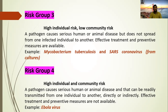Risk group 4 microorganisms have the highest risk for both the individual and the community. Unfortunately, in risk group 4, effective treatment and preventive measures are not available yet. The spread of infection from one individual to another is highly probable, and the spread may occur directly or indirectly. A pathogen in this group causes serious human or animal disease that can be readily transmitted from one individual to another. The best example of a risk group 4 pathogen is Ebola virus, against which no treatment or preventive measures are currently available.